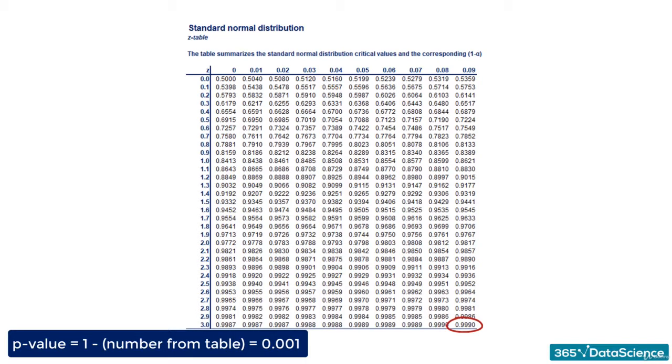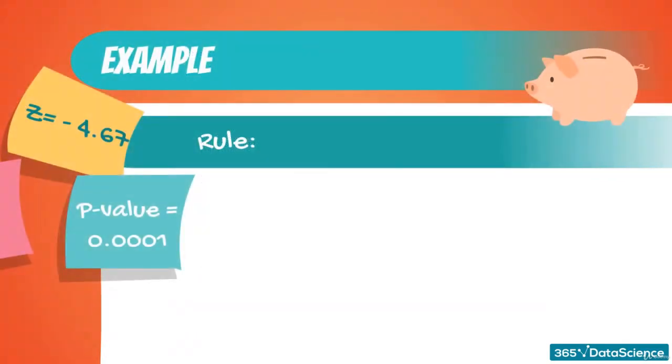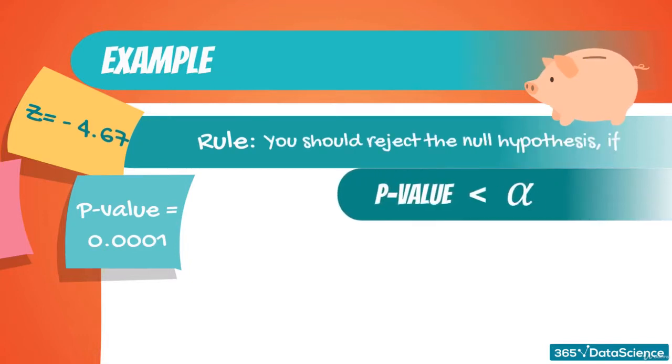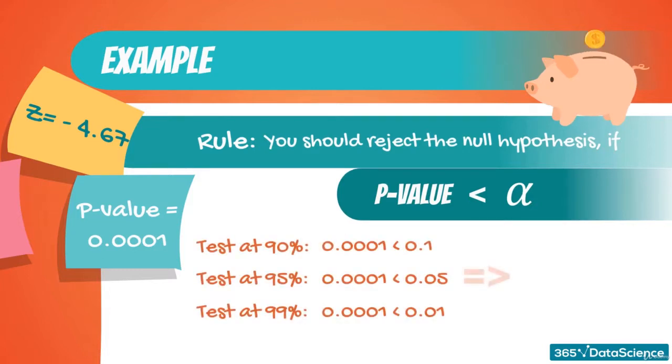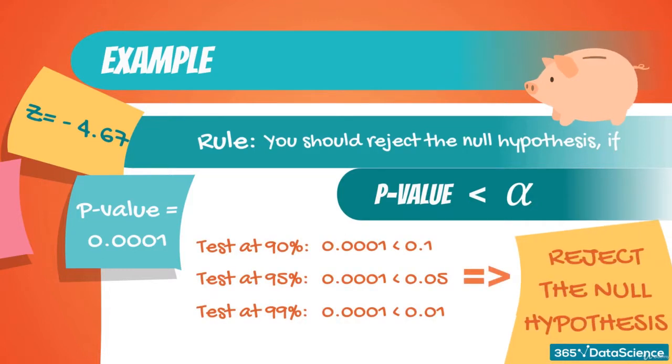Wait, but how do we actually test the hypothesis? Well, after choosing a significance level of alpha, you compare the p-value to it. You should reject the null hypothesis if the p-value is lower than the significance level. Therefore, we can safely say that such a result is extremely significant by any measurement of significance.